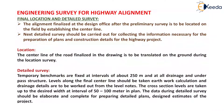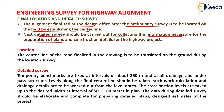After preliminary survey, we proceed with the final location and detailed survey. The alignment finalized at the design office after the preliminary survey is to be located on the field by establishing the center line. A detailed survey is then carried out for collecting the information necessary for the preparation of plans and construction details for the highway project. In detailed surveying, material estimation, cost estimation, design, and planning are done along the finalized alignment.